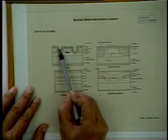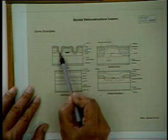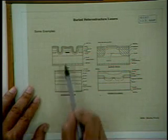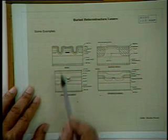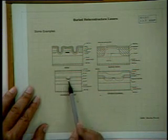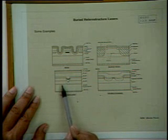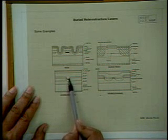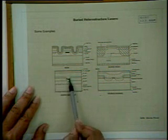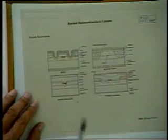Here you have a grooved structure — vertical grooving to define the active layer — and here you have a buried crescent. This is called a buried crescent laser, but look at this: the active layer is not planar, it's curved, so it's a buried crescent laser.